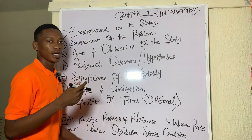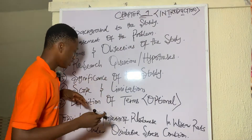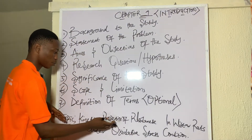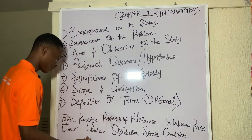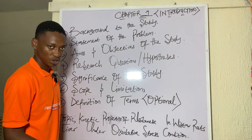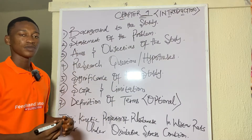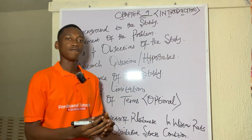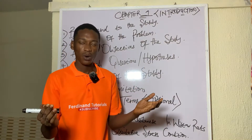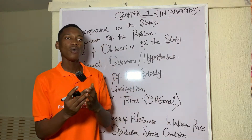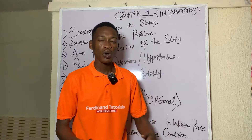In the background to the study, we're trying to lay a foundation of our study. Say our topic is 'kinetic properties of rhodanese in Wistar rat's liver under oxidative stress condition.' What I'm trying to do is lay a foundation — I start with what is already known, and how I get that is through scientific research articles. I use published articles to obtain existing knowledge.